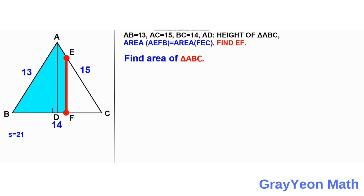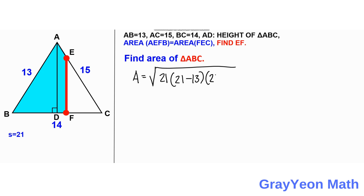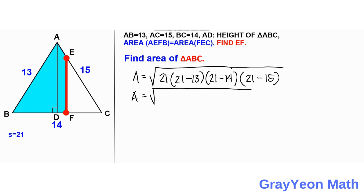So next thing that we need to do is we need to find the area of triangle ABC using Heron's formula. So the area is equal to the square root of the semi-perimeter, which is 21, times 21 minus 13, times 21 minus 14, times 21 minus 15.